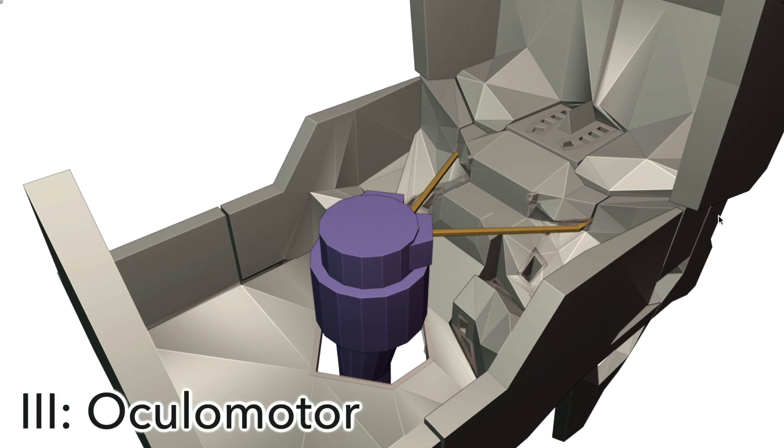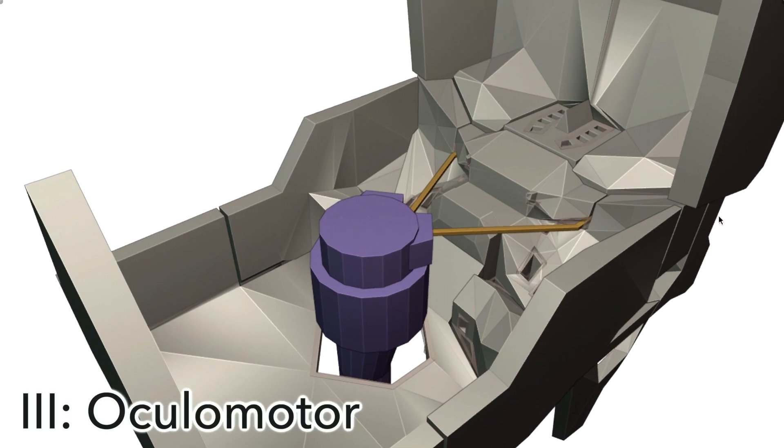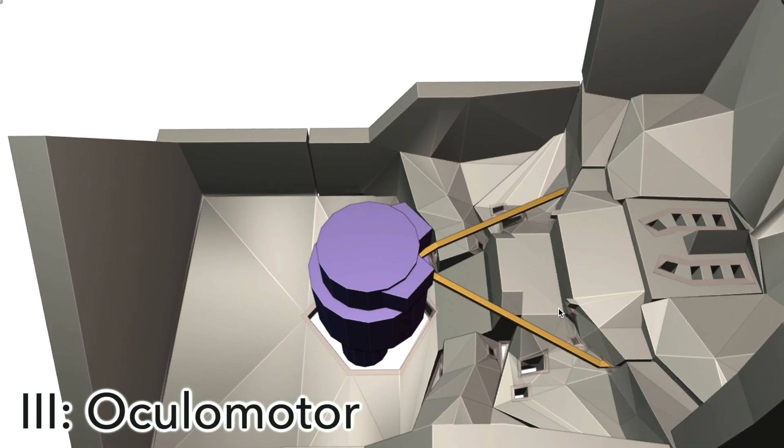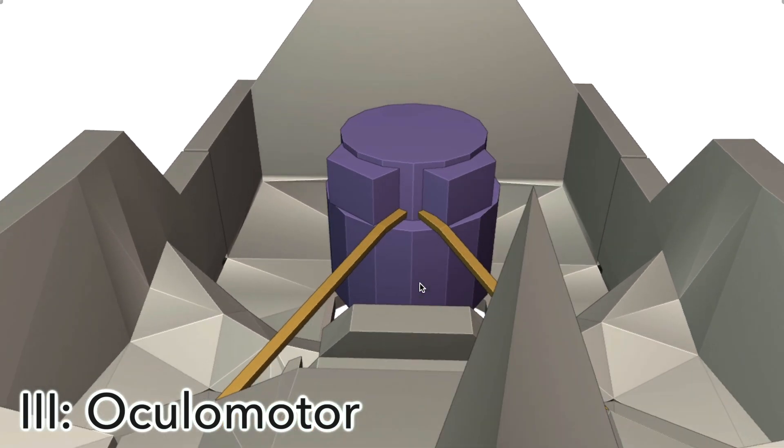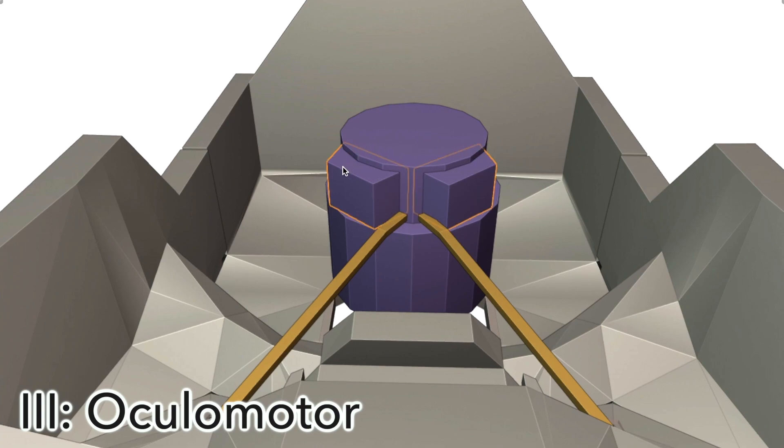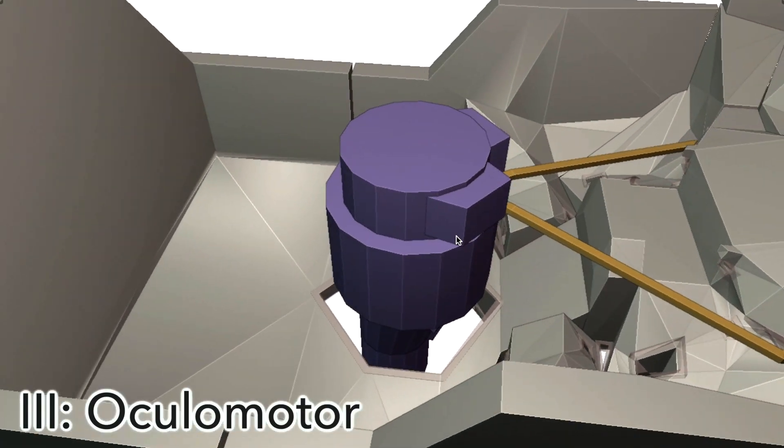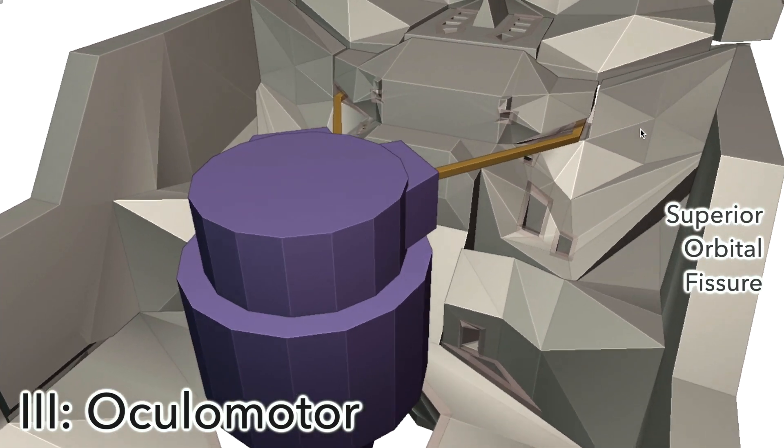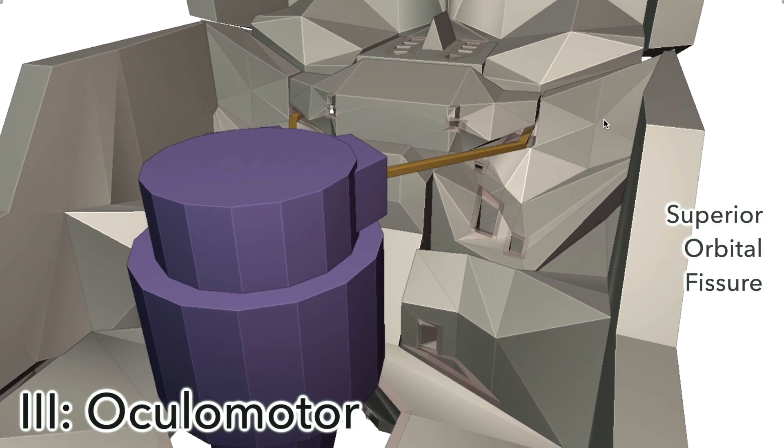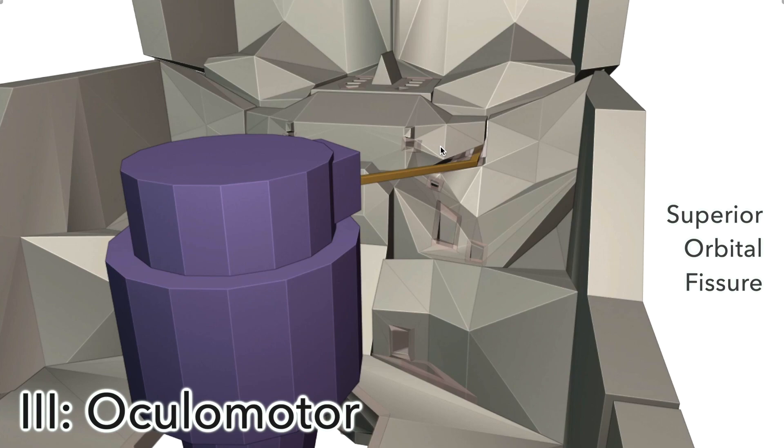Third, we have the oculomotor nerve, which is the first cranial nerve that plugs into the brain stem. Coming out from the midbrain anteriorly is these two white matter tracts called the cerebral peduncles. And the origin of the oculomotor nerve is just between these two cerebral peduncles. It enters the eye socket or the orbit through the superior orbital fissure, which is just here.